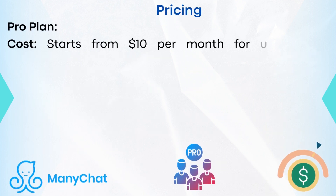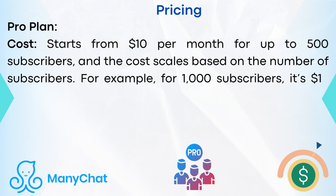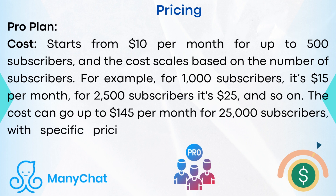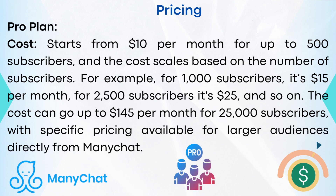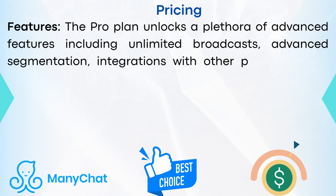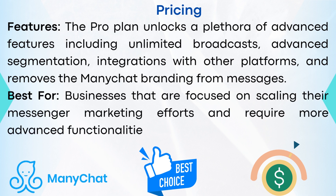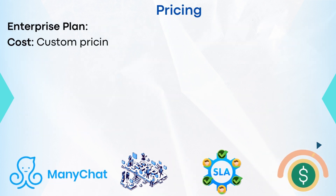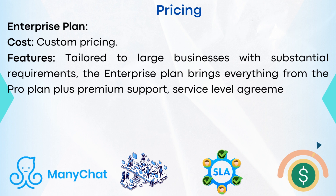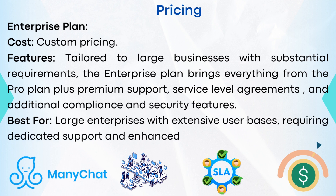Pro plan — starts from $10 per month for up to 500 subscribers, and the cost scales based on the number of subscribers. For example, for 1,000 subscribers it's $15 per month; for 2,500 subscribers it's $25, and so on. The cost can go up to $145 per month for 25,000 subscribers, with specific pricing available for larger audiences directly from ManyChat. The pro plan unlocks a plethora of advanced features including unlimited broadcasts, advanced segmentation, integrations with other platforms, and removes ManyChat branding from messages. This plan is best for businesses focused on scaling their messenger marketing efforts. Enterprise plan — custom pricing. Tailored to large businesses with substantial requirements, the enterprise plan brings everything from the pro plan plus premium support, service level agreements, and additional compliance and security features. Best for large enterprises with extensive user bases requiring dedicated support and enhanced service capabilities.